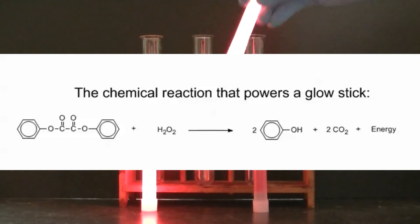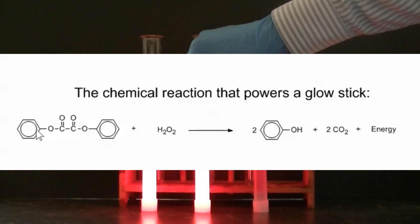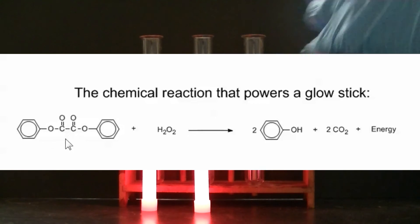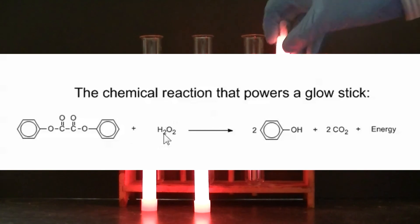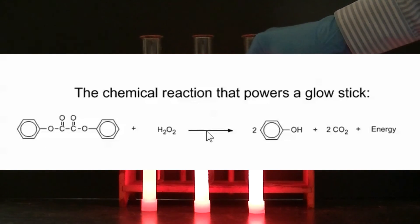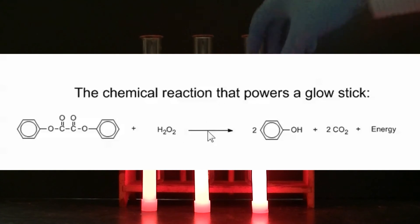The two chemicals that are involved in the chemical reaction, or that are reactants, are phenyl oxalate derivative and hydrogen peroxide. When those two reactants combine, they chemically react and they produce carbon dioxide gas.